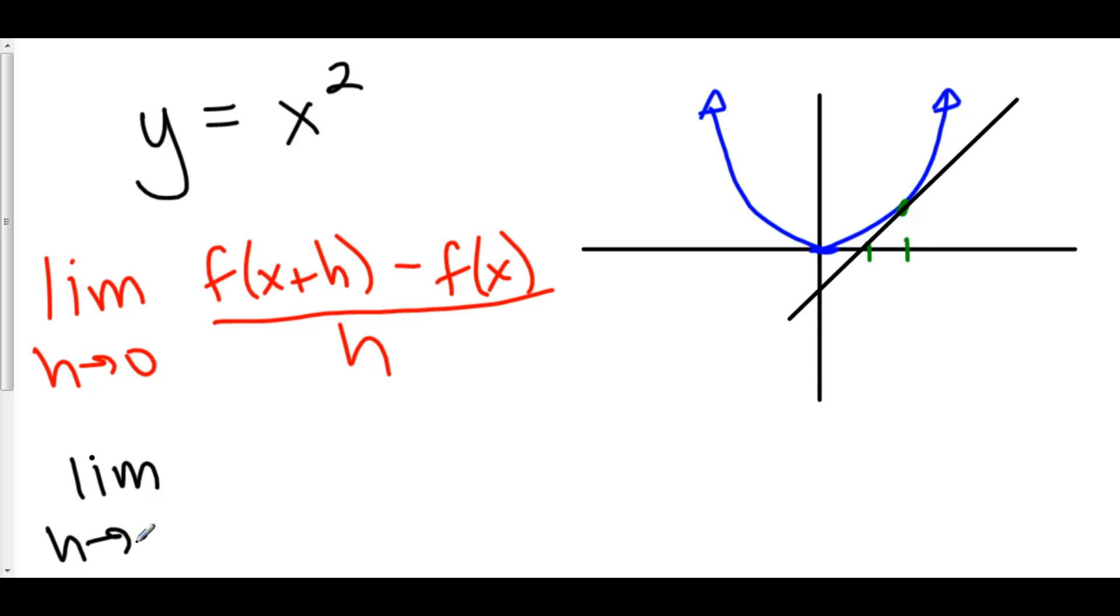We've got the limit as h approaches 0. If I were to plug x plus h into x, that would be stuff squared, minus plugging x into our function, that's just x squared, all over h.